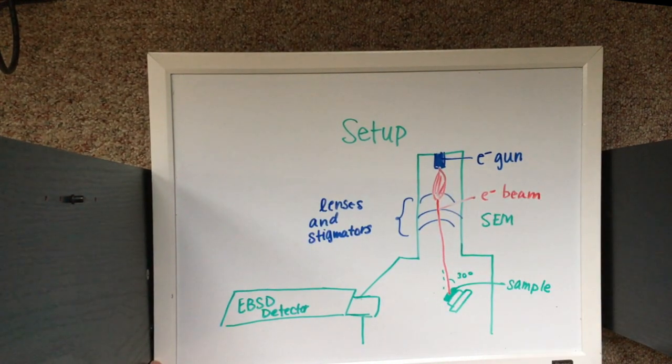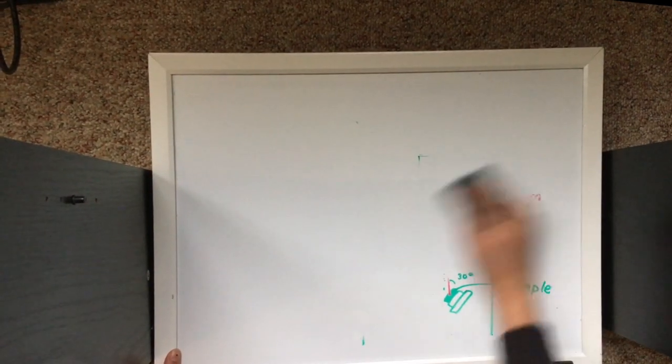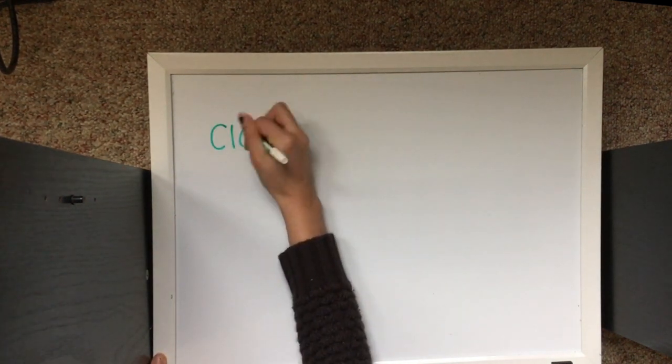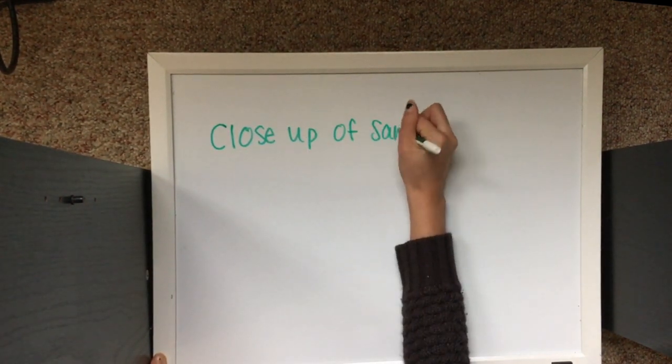When the electrons hit the sample, they will enter and diffract along the crystallographic planes that satisfy Bragg's law. The diffracted electrons interfere constructively to form a pattern of intersecting bands that represent the reflecting planes at that location in the sample.